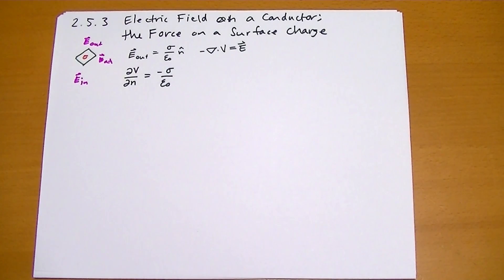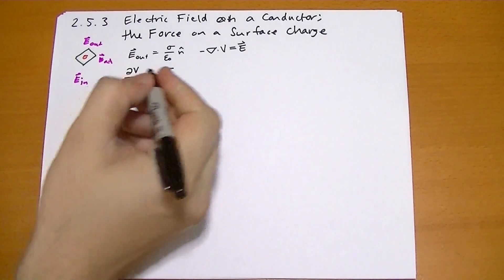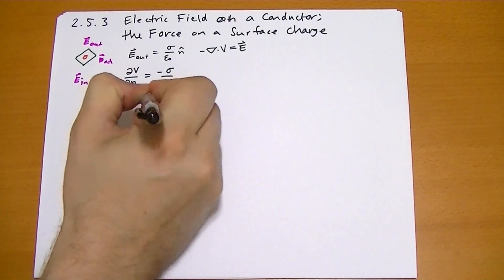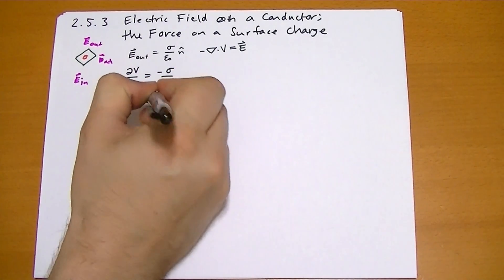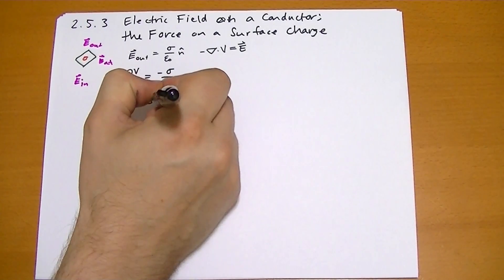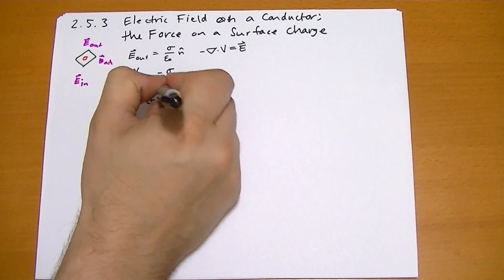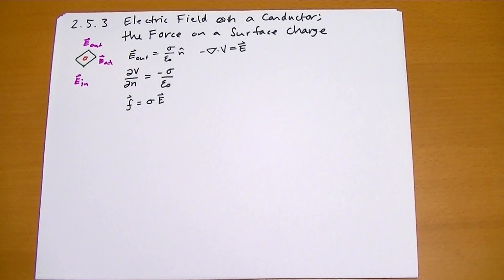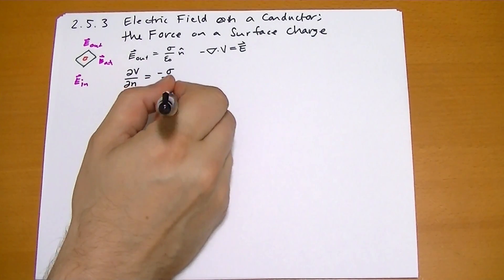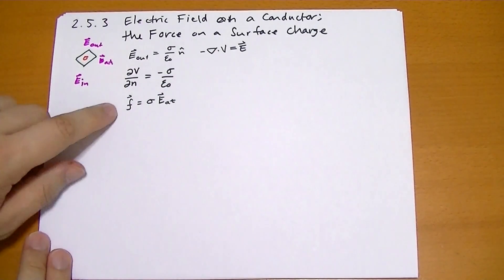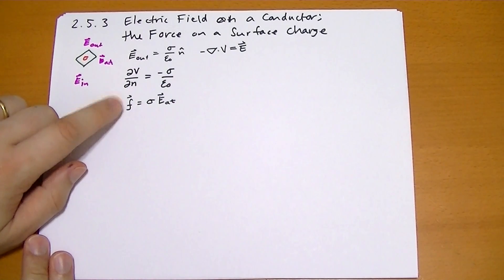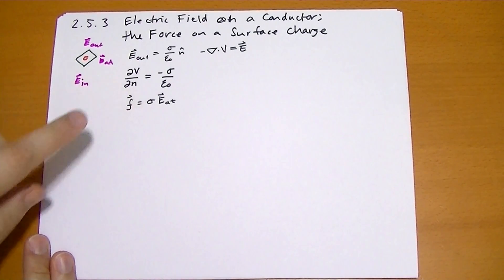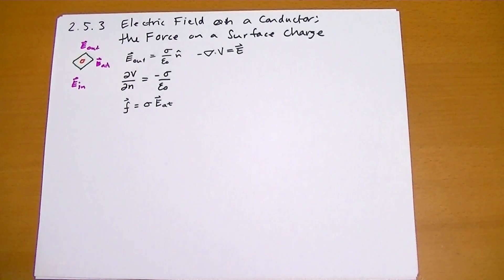So the force on a surface charge — we're going to write this as curly F equals the surface charge density times the electric field at the surface. This is not the total force; this is the force per unit surface area, because sigma is the charge per unit surface area.